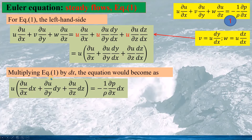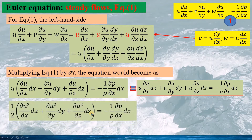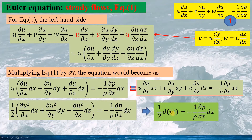Now we multiply equation 1 by dx, and the momentum equation becomes this form. We can rewrite this expression, and the term in brackets is d(u²), so we have the first momentum equation in terms of the differential of u squared.